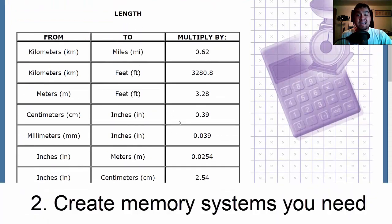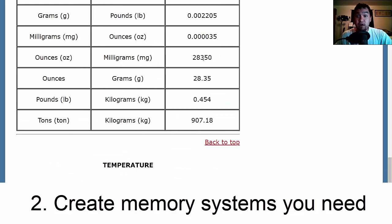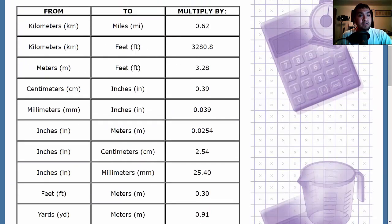Second, create any memory systems you might need. Now it's a conversion, right? So numbers are going to be involved in some way. So have a number system. But also you have all these different measurements, right? So it might be smart to make a system on these measurements.